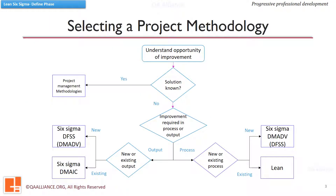To select a methodology for an improvement project, we can make use of this flowchart. As we can see, the DMAIC methodology is used when the solution is not known and improvement is required in an existing process output. DFSS is used when an improvement solution is required for a new process output. DMADV and Lean are the methodologies which improve processes. In case an optimized process has to be designed, we make use of DMADV, while if we have to improve an existing process, we apply Lean.